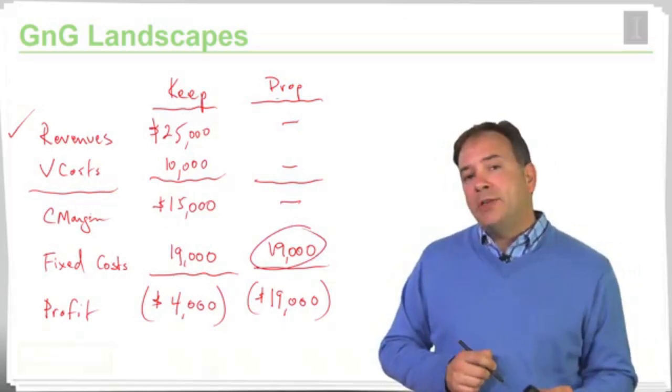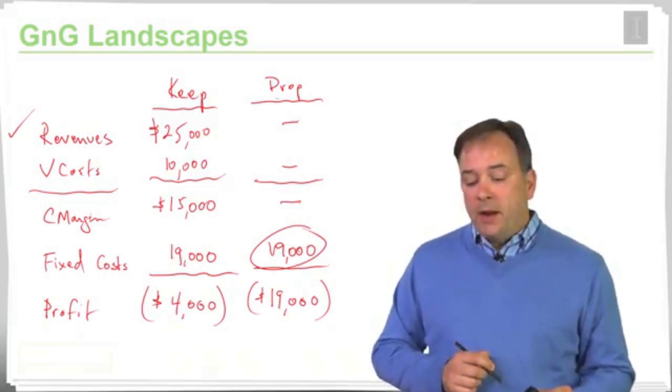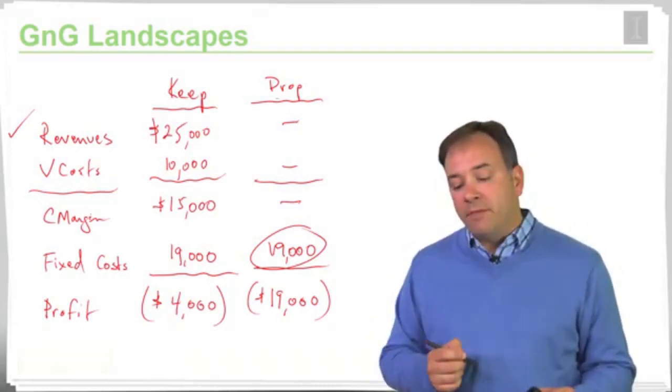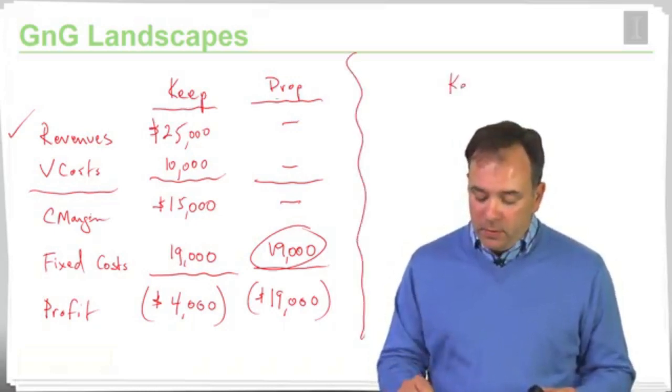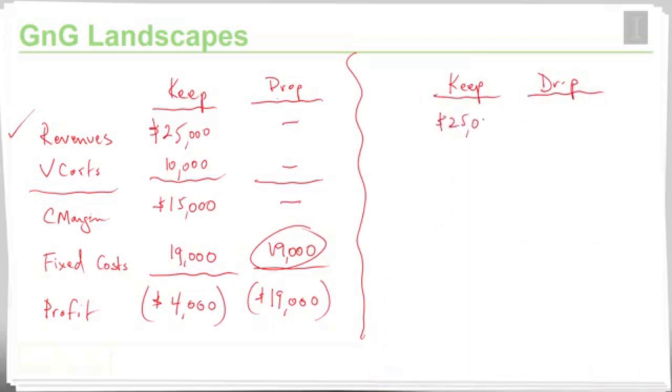Now, a related question in this setting has to do with what is actually avoidable and how much fixed costs would have to be avoided or saved to make Scott's plan feasible. Using the same information, we would treat everything exactly the same. To keep, revenues would be $25,000, variable costs would be $10,000, contribution margin would be $15,000, fixed costs would be $19,000, and the loss would be $4,000. To make the drop option feasible, the revenues would not be there if we were to eliminate the apartment and condo line. So that $25,000 is gone, as is the variable costs of $10,000. And therefore, it follows that we would lose the contribution margin of $15,000 that we had earlier.